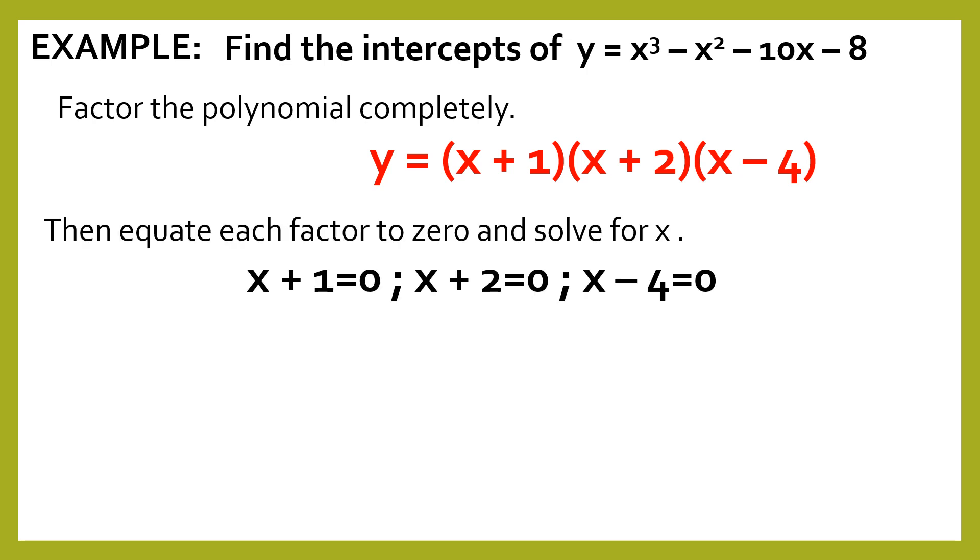Using this, you equate each factor to 0 and then solve for x. So x + 1 equals 0, x + 2 equals 0, then x - 4 equals 0. The next step is for us to solve for x. All you need to do is transpose the positive 1, transpose the positive 2, and transpose the negative 4. You'll get the values of x: x equals negative 1, x equals negative 2, and x equals positive 4.